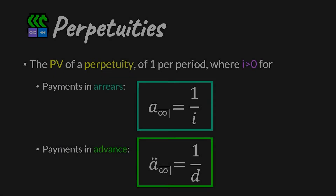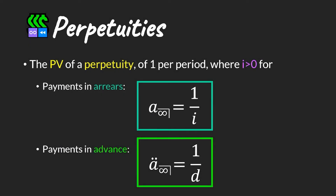For payments in advance, the present value 1 over (1 minus v) can be rewritten as 1 over d, denoted using the formula in pink. More formally, for the present value of a perpetuity of one per period with interest rate i greater than zero: for payment in arrears we use 1/i, and for payments in advance we use 1/d — the only difference being whether i or d appears in the denominator.